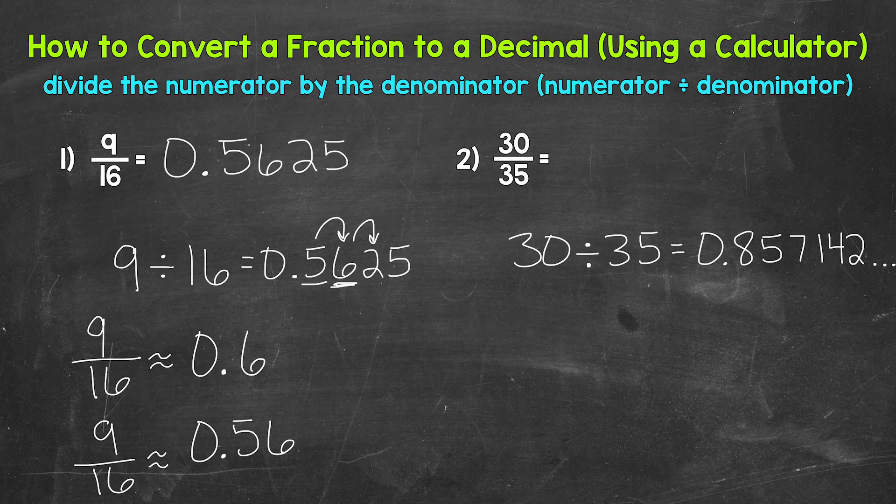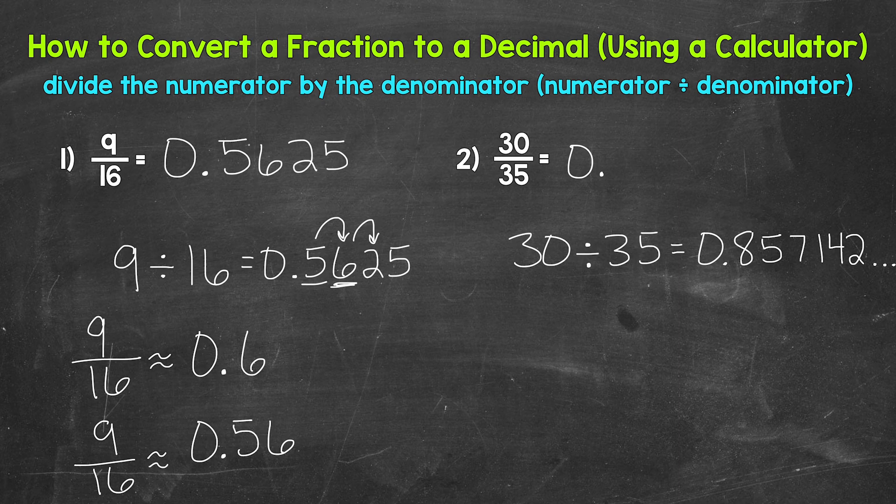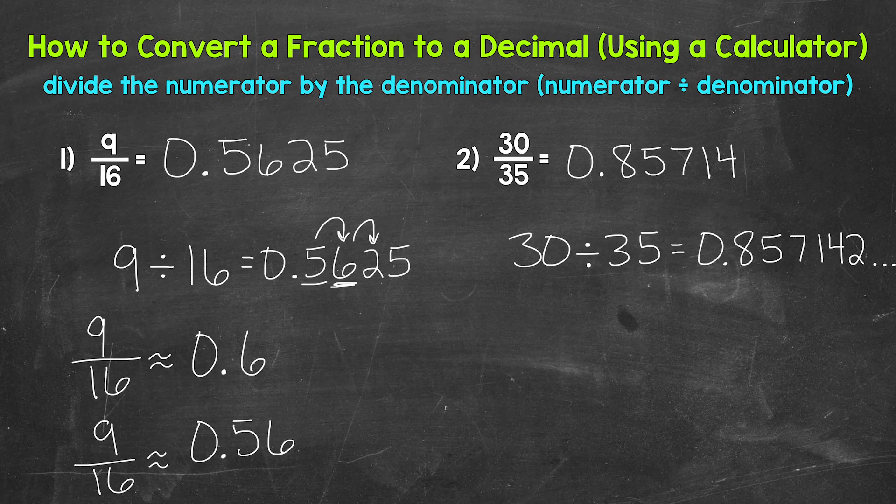what we can do if we have a long decimal or a repeating decimal, we can round. But before we round here, let's write this out as a repeating decimal. 30 over 35, 30 thirty-fifths equals 0.857142. And we can put a bar above those digits to show that they repeat. Now,